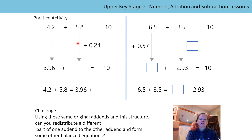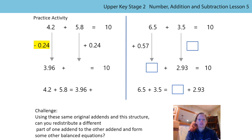Did you notice something? Did you notice that we added 0.24 to this addend? So what did it mean we had to do to the other addend? That's right, we had to subtract 0.24. Now I'm interested in how you did this calculation to fill in this missing box here. Did you notice that you've got 2 tenths and 8 tenths, in which case we can use our number bonds?